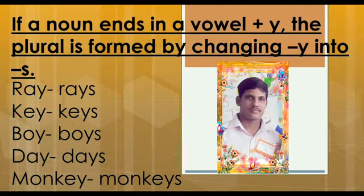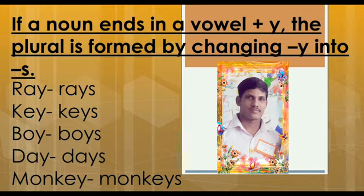If a noun ends in a vowel plus Y, the plural is formed by changing Y into S. Examples: Key becomes keys, Boy becomes boys, Day becomes days, Monkey becomes monkeys.